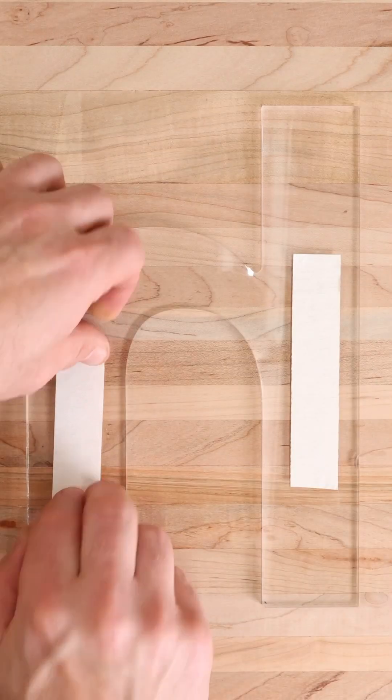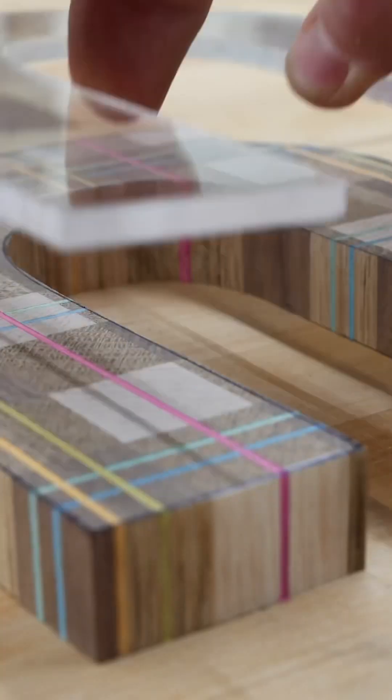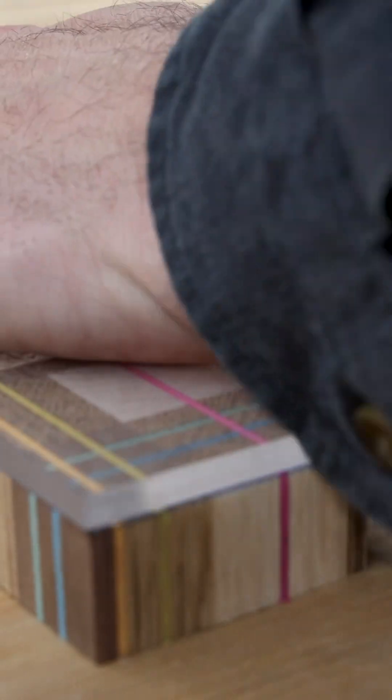It's all cut out so we'll use some double-sided tape to temporarily adhere the router template to the letter. Almost done.